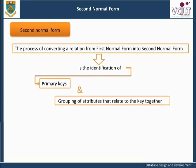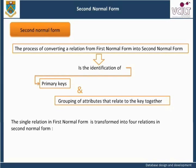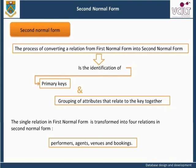Data items which are only partial dependencies, as they are not fully functionally dependent on the primary key, need to be extracted to form new relations. The single relation in first normal form is transformed into four relations in second normal form, working from the 1NF determinacy diagram: Performers, Agents, Venues, and Bookings.